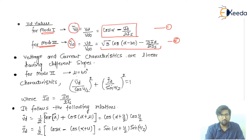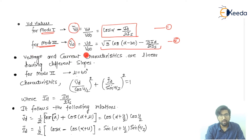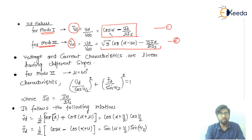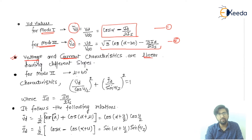Now looking at the relationship between Vd and Id — the V-I characteristics — these are linear with different slopes. For mode 1 there is one slope, and for mode 3 there is a different slope, but both are linear characteristics based on their respective equations.